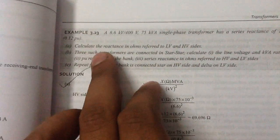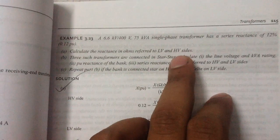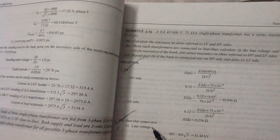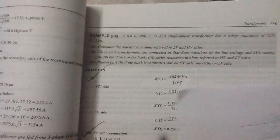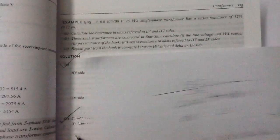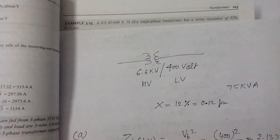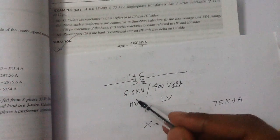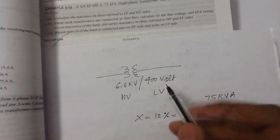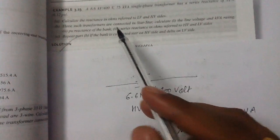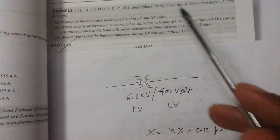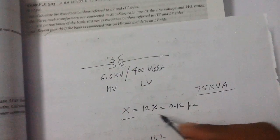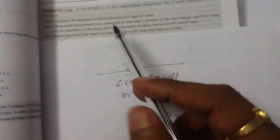Part A asks us to calculate the reactance in ohms referred to the LV side and HV side. In this example (3.23), the HV side voltage rating is 6.6 kilovolt, the LV side voltage rating is 400 volt, the rating is 75 kilovolt-ampere, and the reactance is 12% or 0.12 per unit.